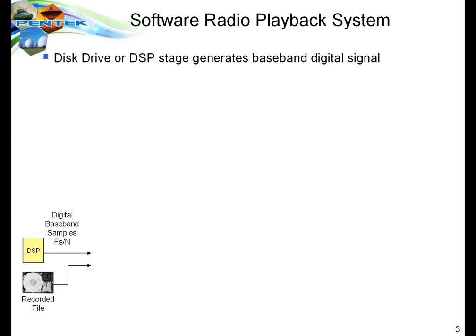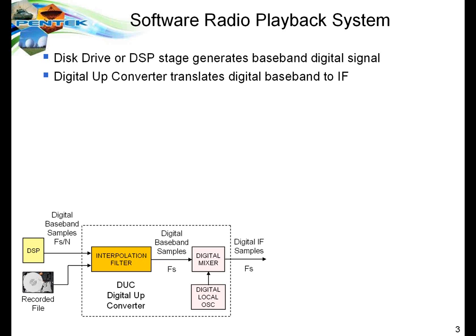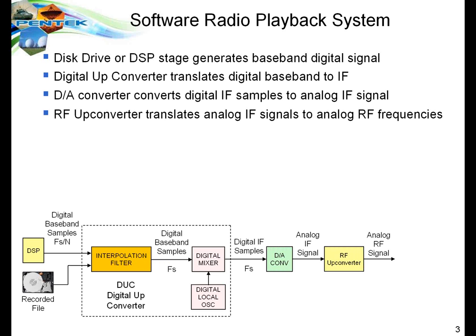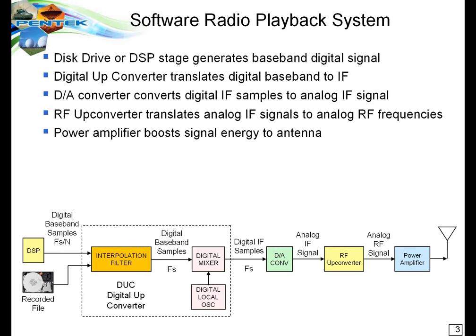If we turn it around and go to the playback system, it basically does everything in reverse. It starts out with digital baseband samples from either a DSP or directly off a hard drive. Those digital samples are interpolated — the sampling rate is increased to a higher rate, but the signal itself is preserved. We then go through another mixer and local oscillator using digital technology to translate the baseband digital signals up to IF digital signals, which then go through a D-to-A converter to analog IF and then through an analog RF upconverter to produce an analog RF signal that can be sent through a power amplifier to the antenna.